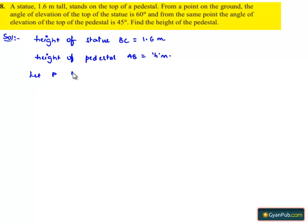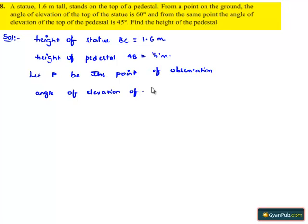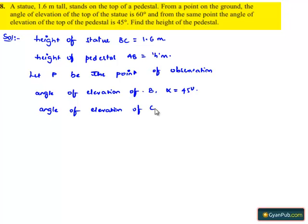Let P be the point of observation. From P, the angle of elevation of the top of the pedestal, that is point B, is given as alpha, which equals 45 degrees. And from the same point, the angle of elevation of the top of the statue, point C, is given as 60 degrees.